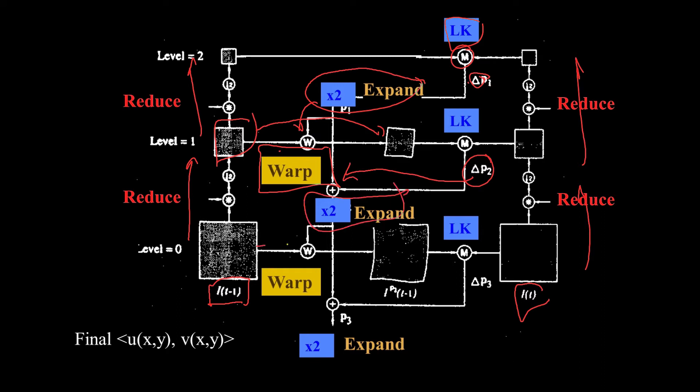Expand up, multiply by two, apply and warp, and continue. And that's how the iterative Lucas-Kanade algorithm works. I know that that's hard to see from a picture.